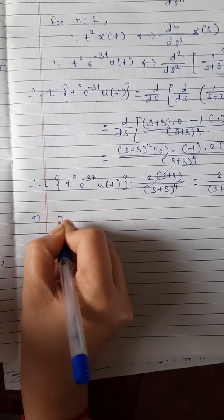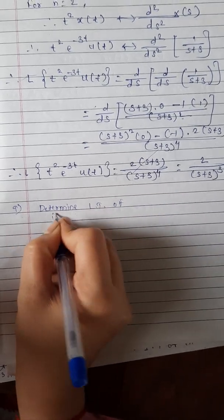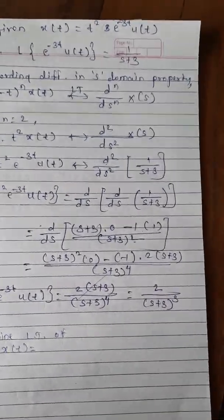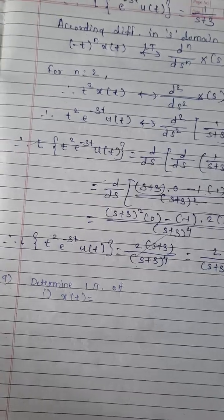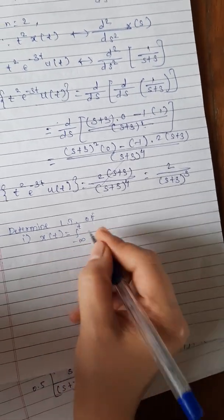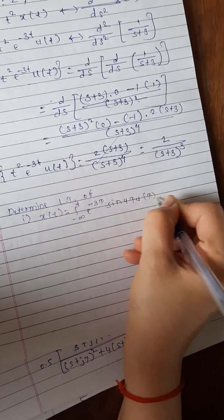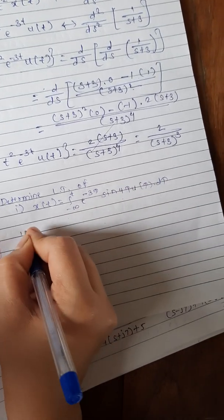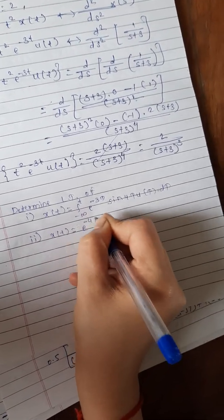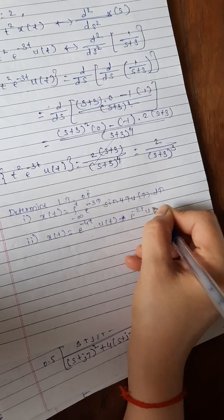Determine the Laplace transform of the following. First, x(t) is equal to the integral from minus infinity to t of e raised to minus 3 tau, sine of 4 tau, u of tau, d tau. And second, x(t) is equal to e raised to minus 4t, u(t), multiplied by e raised to minus 2t, u(t).